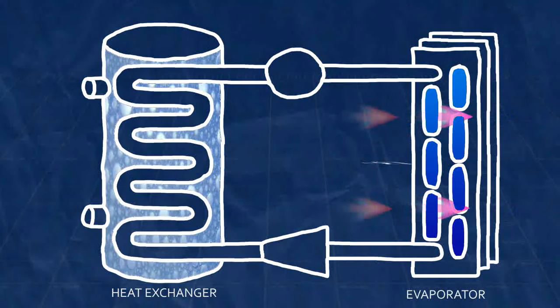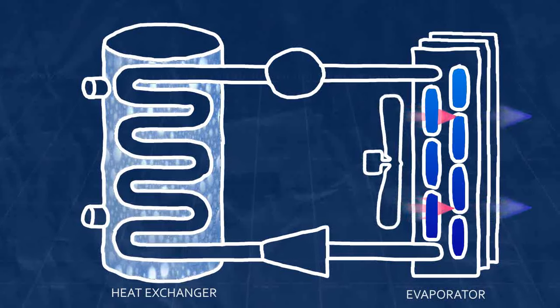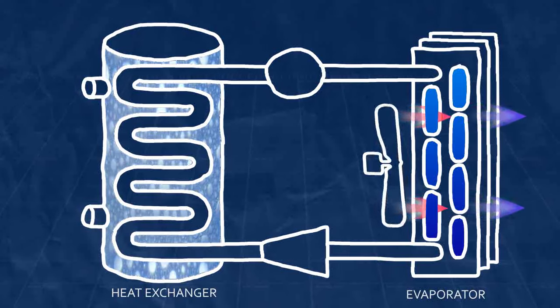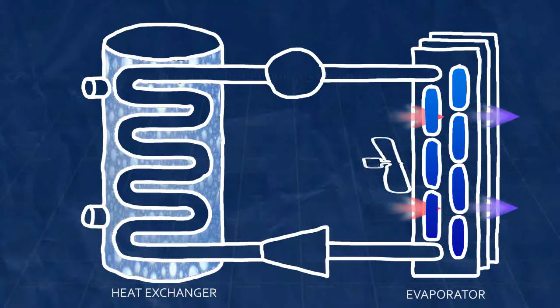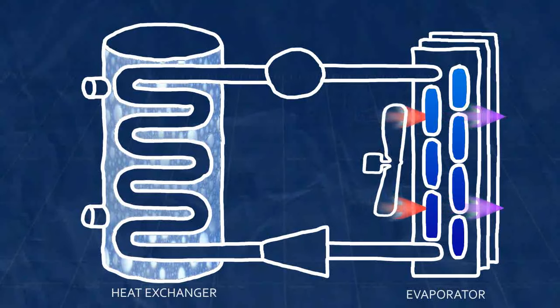The heat added to the refrigerant causes its temperature to rise and the fluid to become a warm, low pressure vapor. As the refrigerant changes from a liquid to gas, large amounts of energy transfer take place.